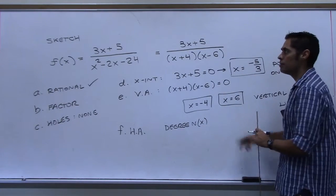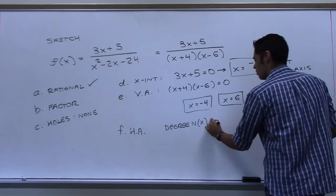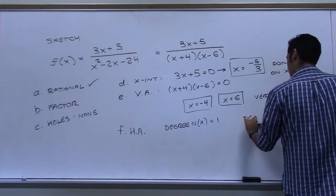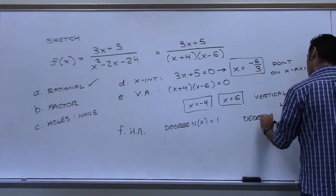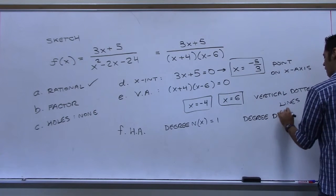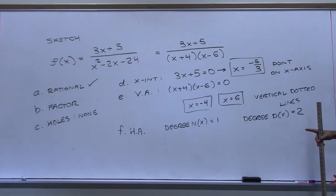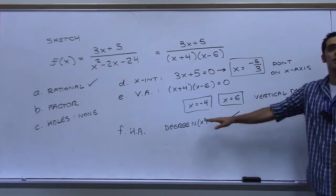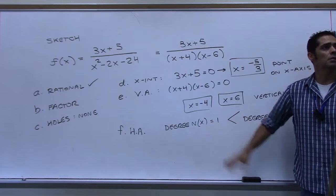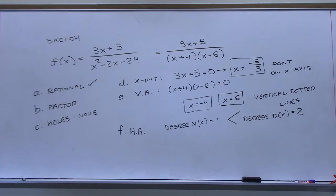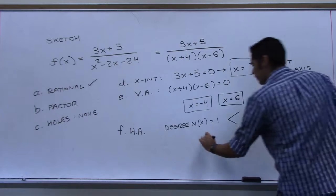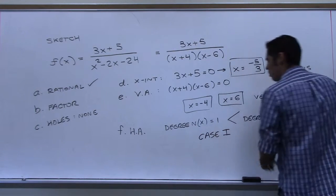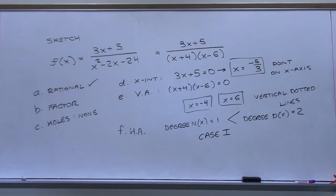The degree of n(x) is the top one, which is one. The degree of the denominator is two. The denominator degree is bigger than the numerator degree, so that's Case 1. In Case 1, the horizontal asymptote is y equals zero.